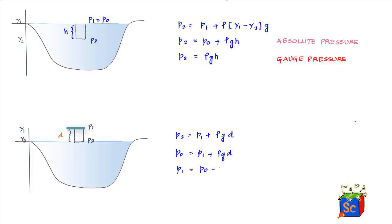Rearranging, the pressure p1 at height d above sea level is p1 = p₀ − ρgd. This means that as you go up in the air column, the weight of air above keeps decreasing, and therefore the pressure decreases. The pressure at altitude d is less than atmospheric pressure p₀ by the term ρgd, which represents the pressure contribution of the air column of height d. Since d is positive, p1 is always less than p₀.